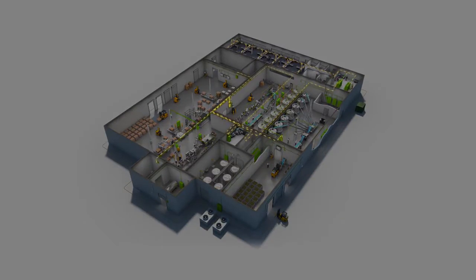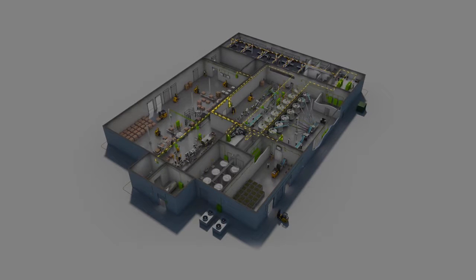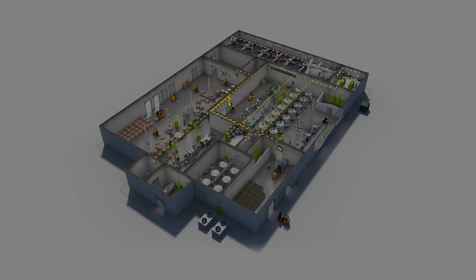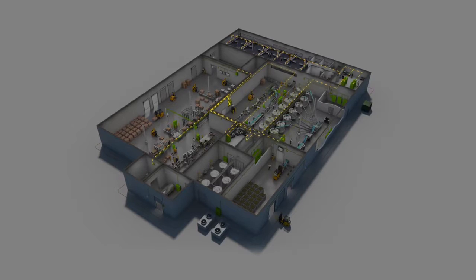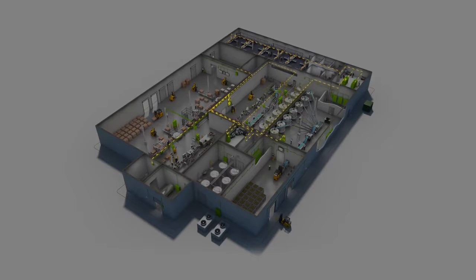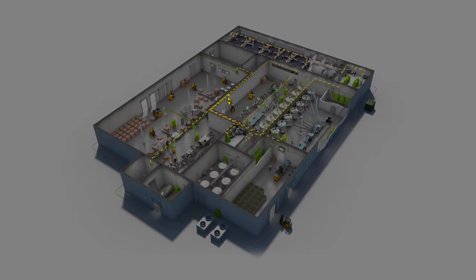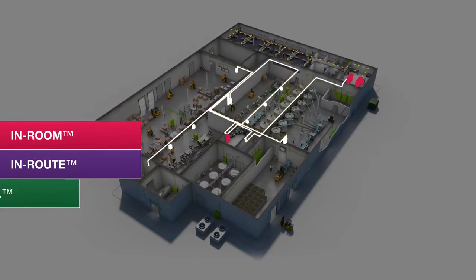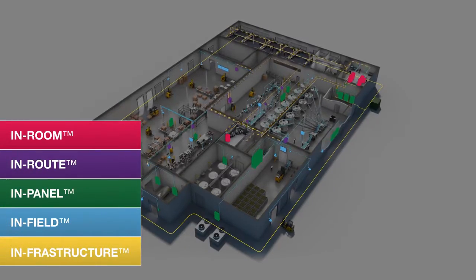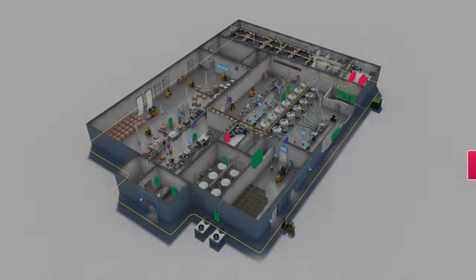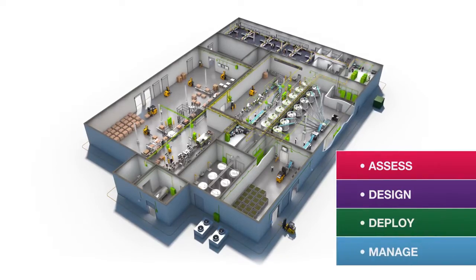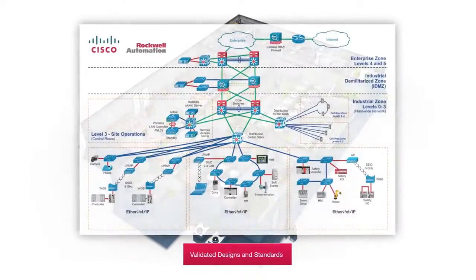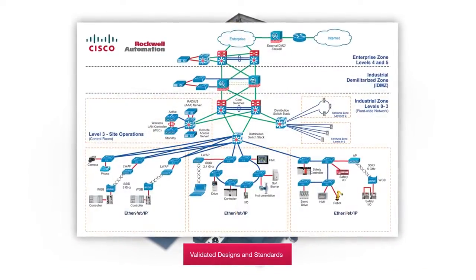A rapid influx of smart equipment and connected devices that can communicate on an industrial Ethernet network is enabling the convergence of enterprise and plant floor networks and integrating islands of automation. Panduit's five industrial solutions, tools, and services will help you assess, design, deploy, and manage a network infrastructure based on validated designs and standards.